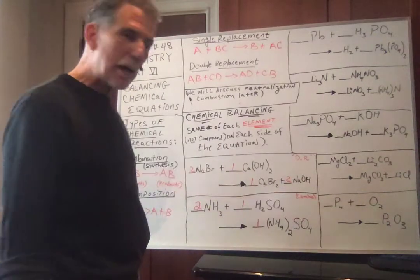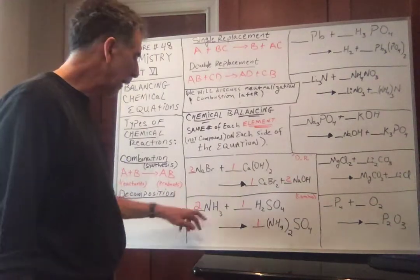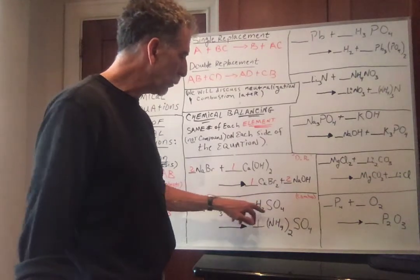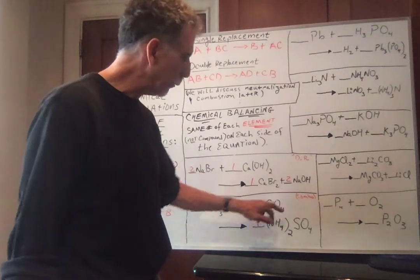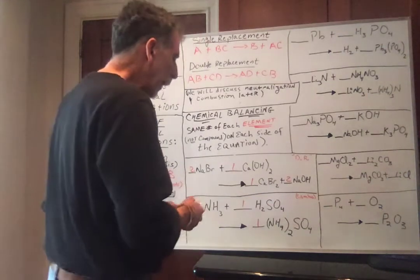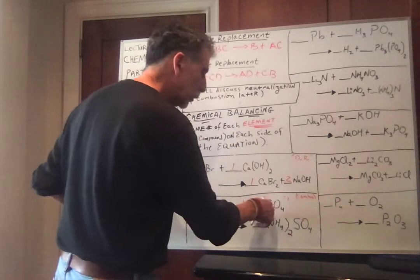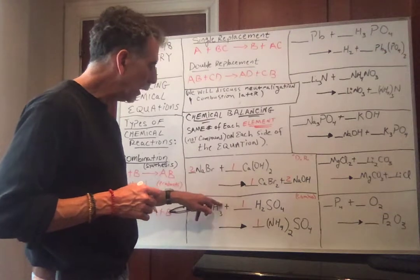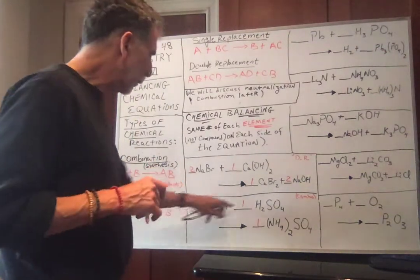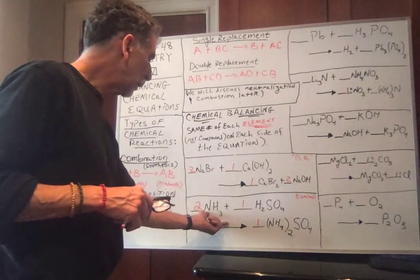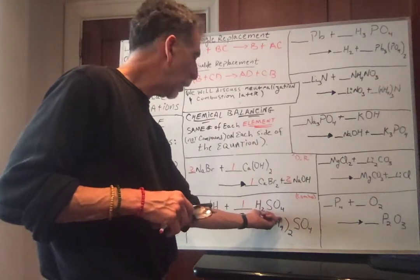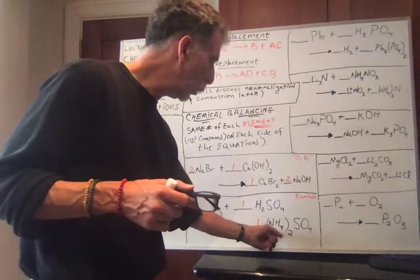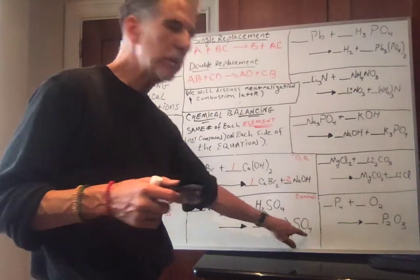Next one is a combination, or synthesis. NH3 — that's nitrogen hydride. H2SO4 is hydrogen sulfate. Later, if this were aqueous, it would be sulfuric acid. Hydrogen is plus one, sulfate ion is minus two, so I need two hydrogens to balance the sulfate. Nitrogen is minus three. NH3 combines with H2SO4 to form — do you remember what NH4 was? NH4 was ammonium. SO4 was sulfate. So the product is ammonium sulfate.